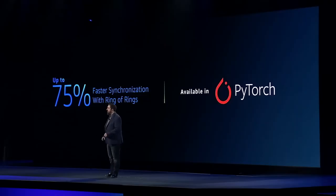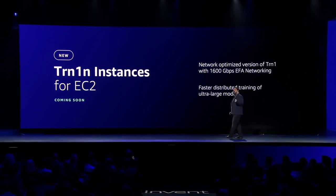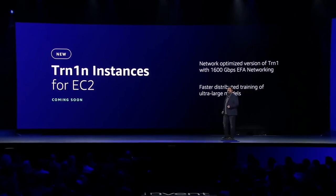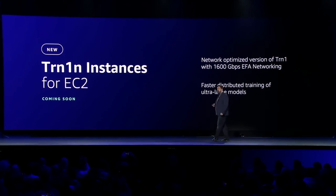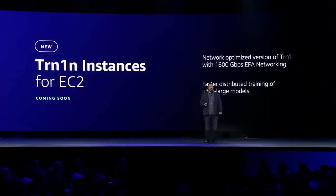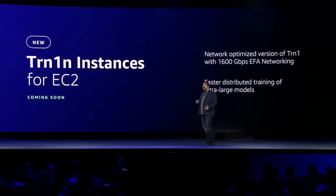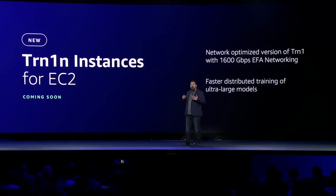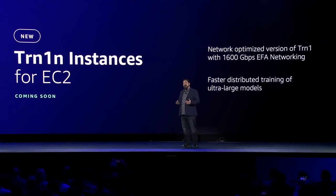Wouldn't it be great if we had a Trainium instance with an even faster network? Tonight I'm excited to announce a network-optimized Trainium-based instance, the TRN-1N. The TRN-1N will offer 1.6 terabits per second of low-latency, EFA-optimized network bandwidth, accelerating innovation by allowing builders to train ultra-large models with even greater efficiency.